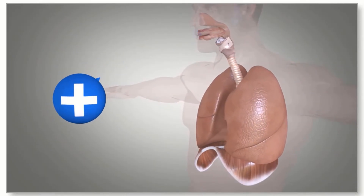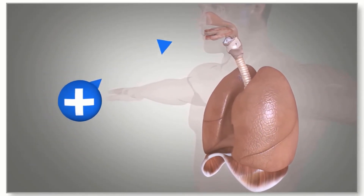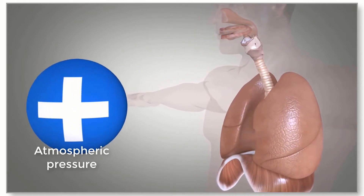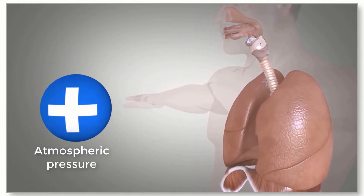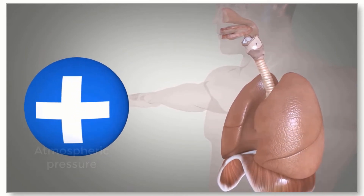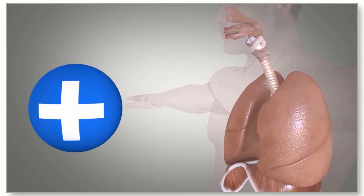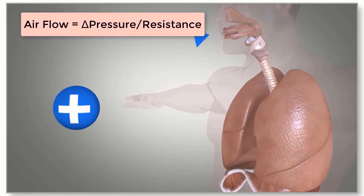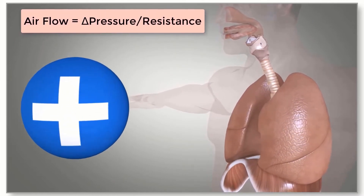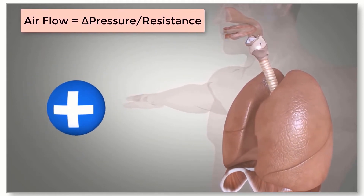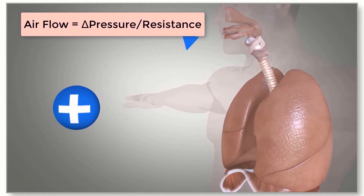A combination of gases in the air makes up atmospheric air. The pressure on the gases in the atmosphere is referred to as atmospheric pressure. So how does air get transported from the atmosphere into the lungs? To answer this question, it is important to examine the formula for air flow. Air flow equals delta pressure over resistance. The formula for air flow is the same as the formula for blood flow. Air flows from areas of higher pressure to areas of lower pressure.